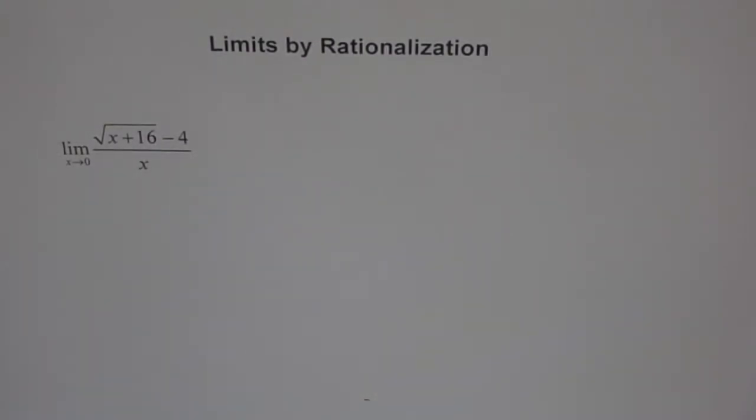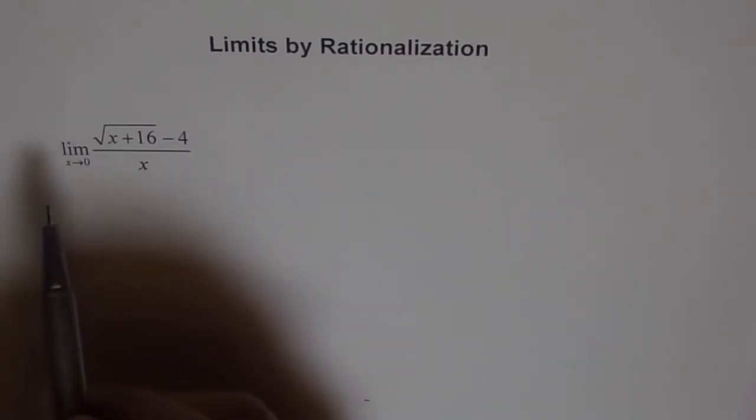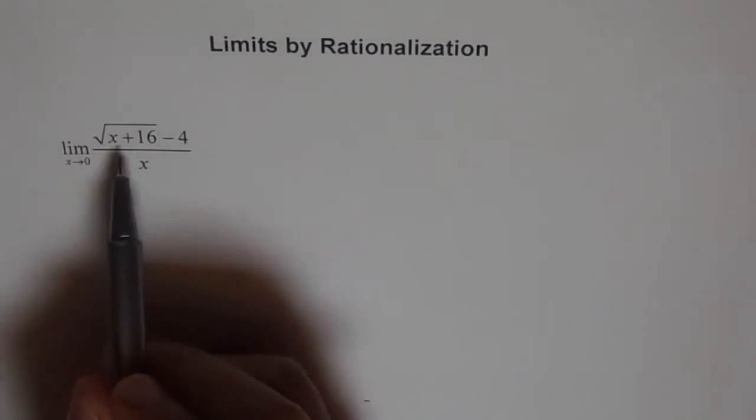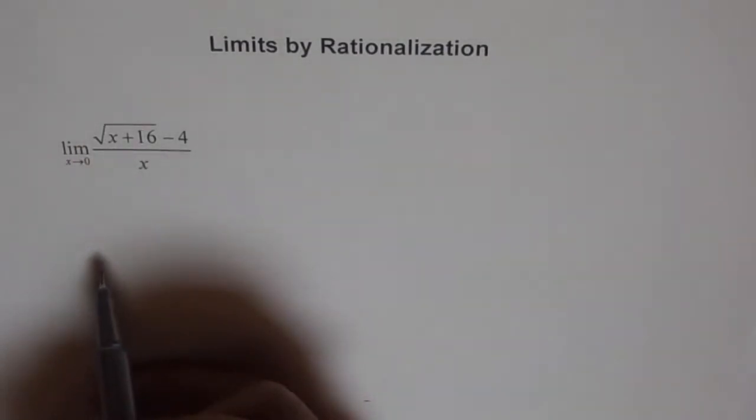Limits by using rationalization. So here is a function which says limit as x approaches 0 for the function square root of x plus 16 minus 4 divided by x.